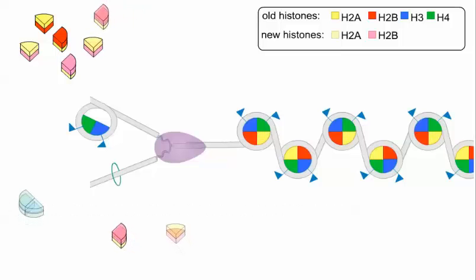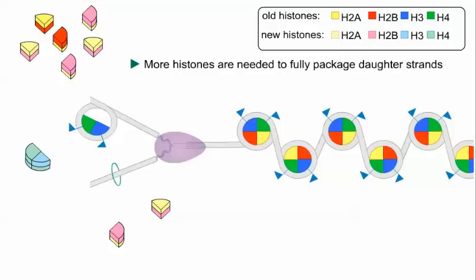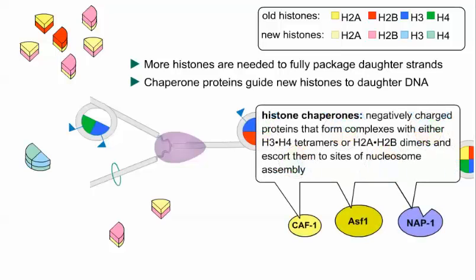Because the amount of DNA has doubled, more histones are needed to fully package the two daughter strands into nucleosomes. These newly synthesized histones do not spontaneously form nucleosomes with DNA in the cell. Instead, histone chaperones guide these new histones to the DNA behind the replication fork.